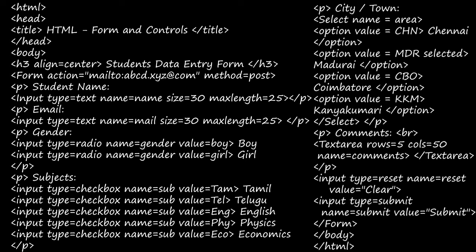And then next one is for email, same way they have used the text box. And then gender, they have used the radio button. Input type is equal to radio, name is equal to gender and value is equal to - you have to enter the values. And after closing the input tag, you have to enter the value again, and then close the paragraph tag. And then next one, input type is equal to checkbox. In subjects, you'll have checkbox, name is equal to subject, value is equal to - you can give any value there. After closing this input tag, you will give the label. In the right side they have given Tamil, Telugu, English, Physics, Economics and all. In this way it will be displayed in that form. After this, the checkbox is done and we'll close this paragraph tag.